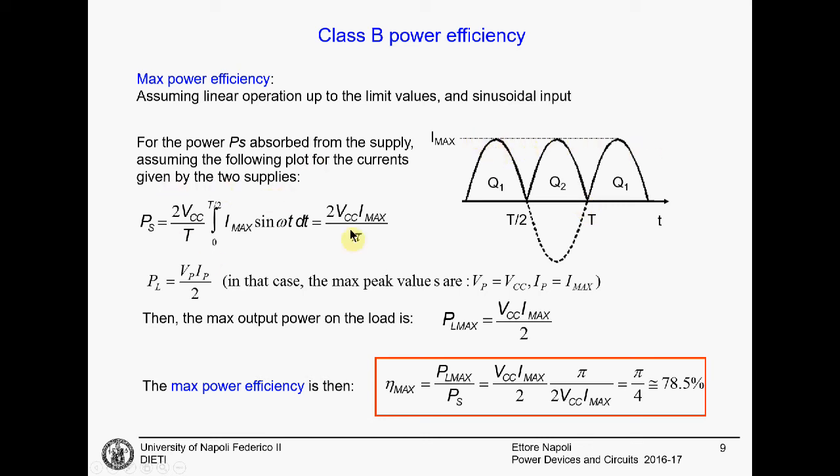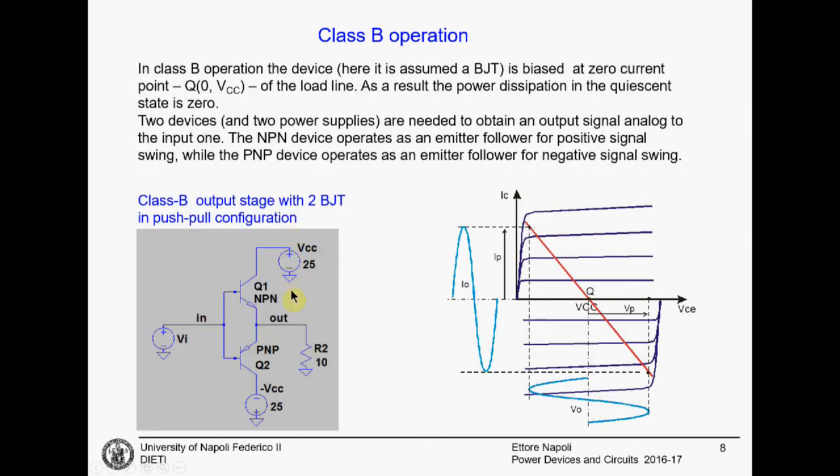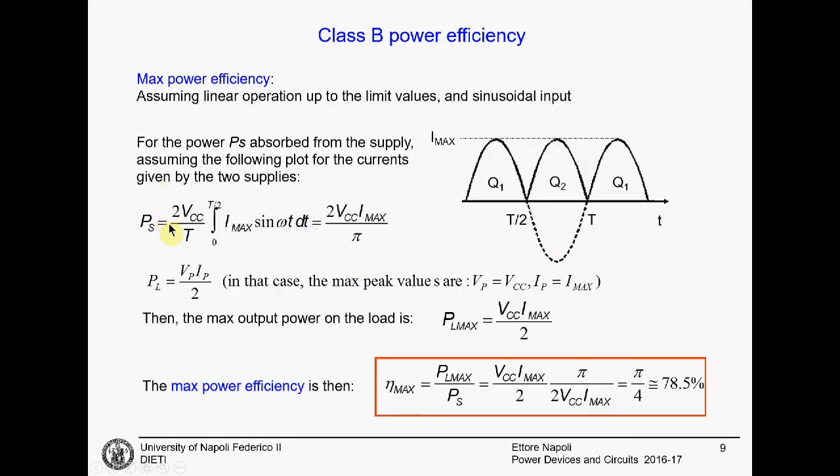The power absorbed from the power supply will be simply calculated as the Vcc, or minus Vcc, multiplied by the current that goes on the load. We need to calculate this up to half of the period and multiply it by 2. This is Imax multiplied by sinusoid, just half a period. You can calculate this integral, and you will have twice Vcc multiplied by Imax divided by π.